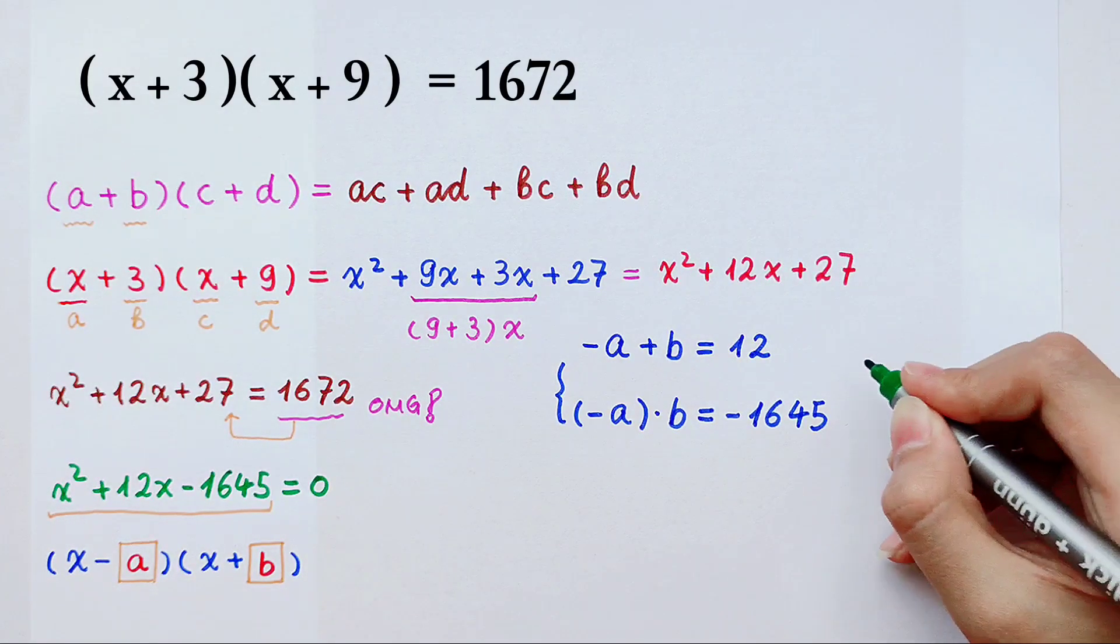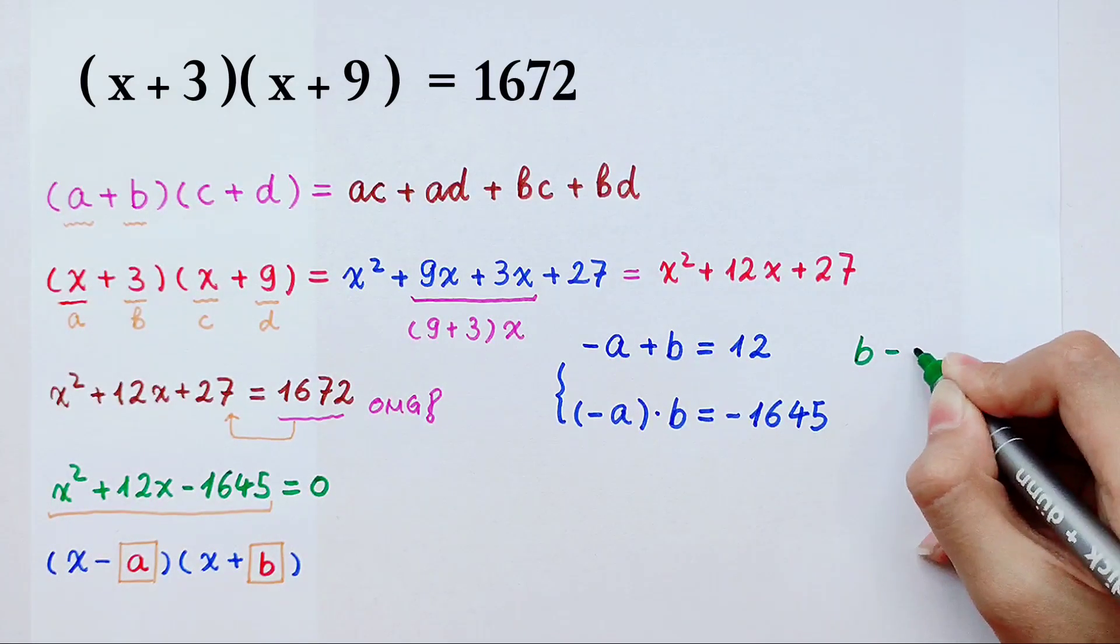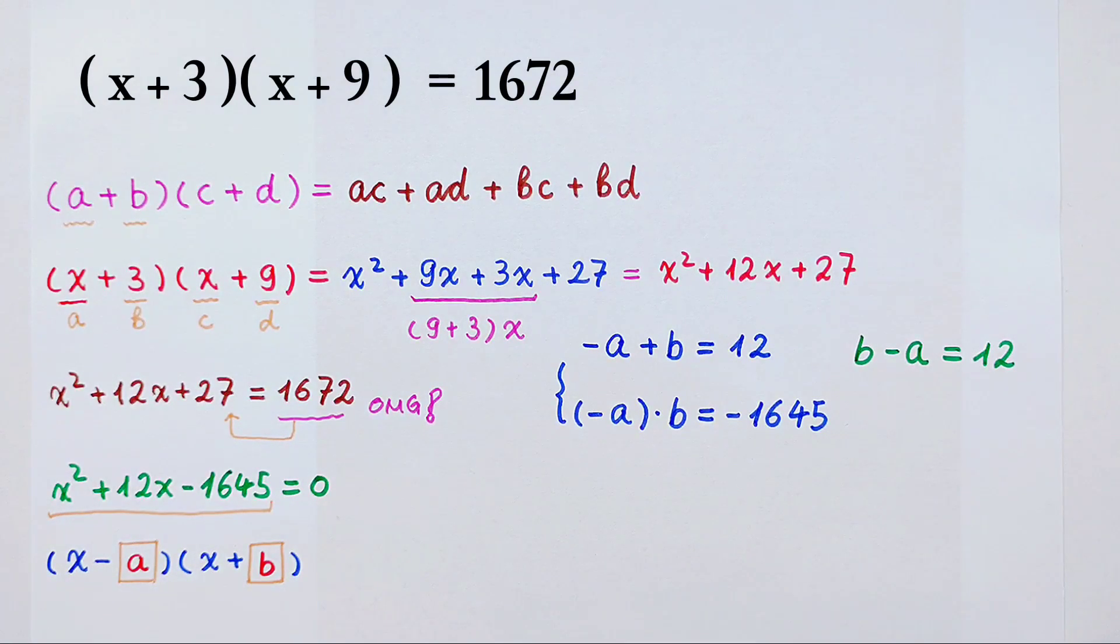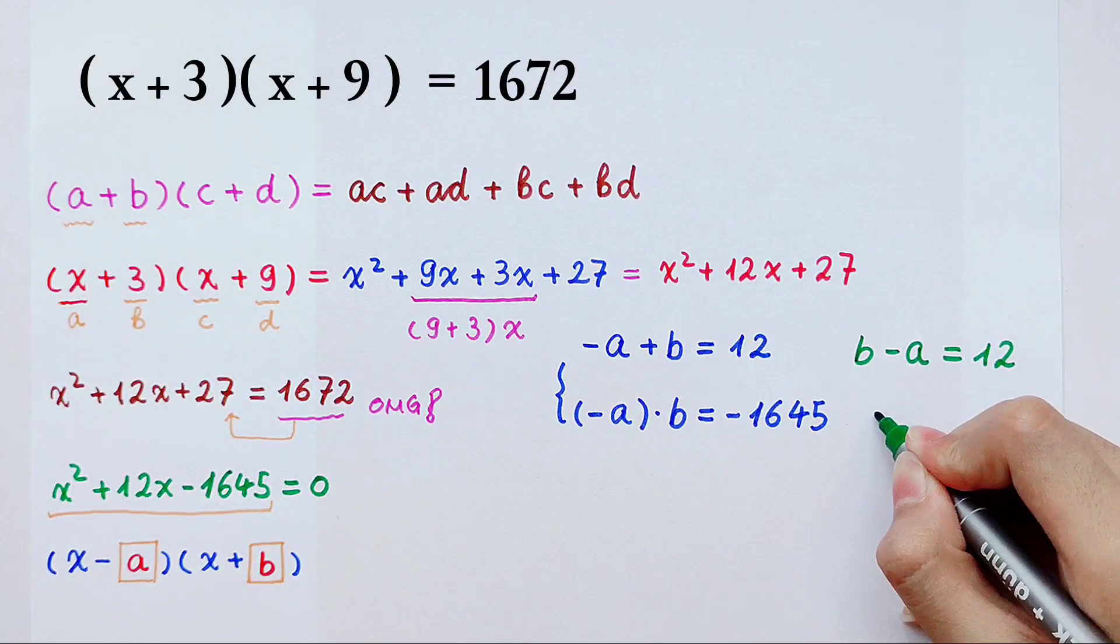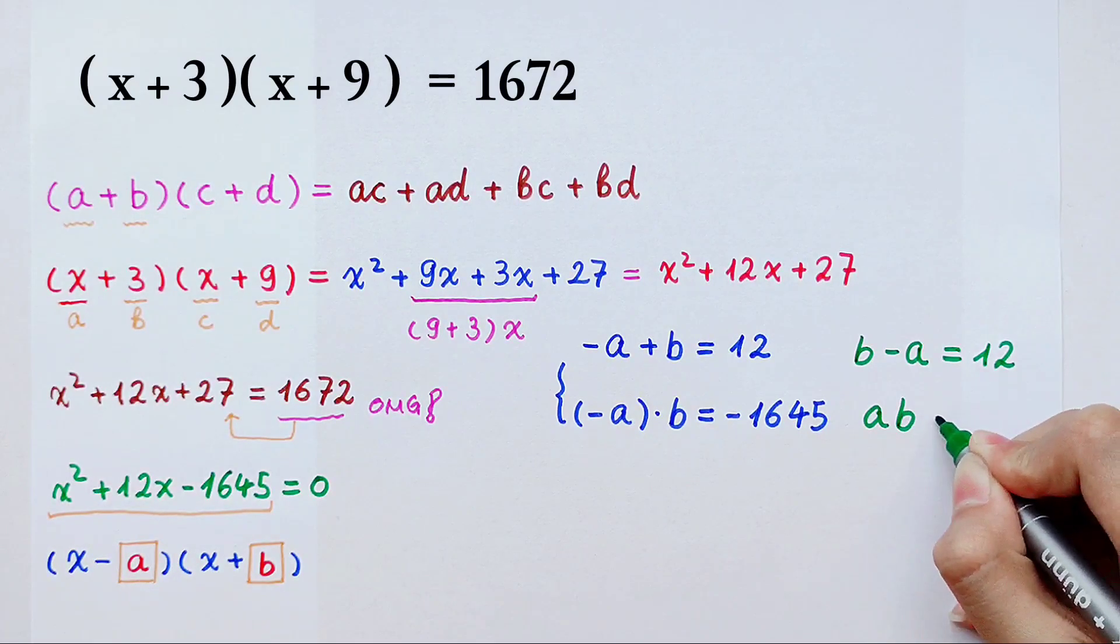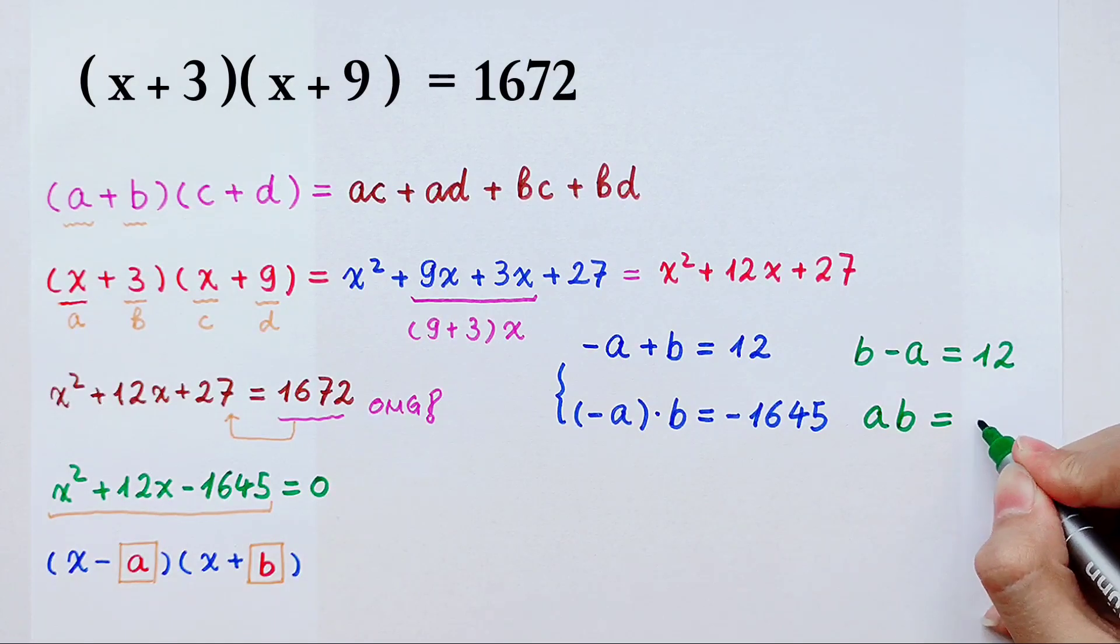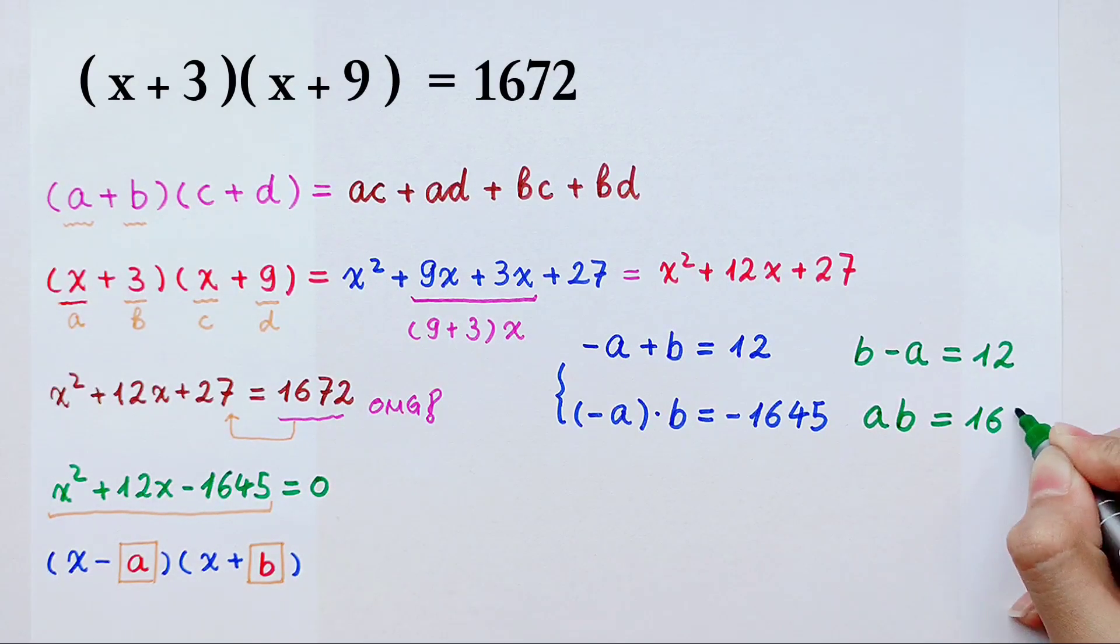From this, I can get that b minus a is 12. And from this, I can get that a times b, multiply or divide it by negative 1 on the both sides, it is 1645.